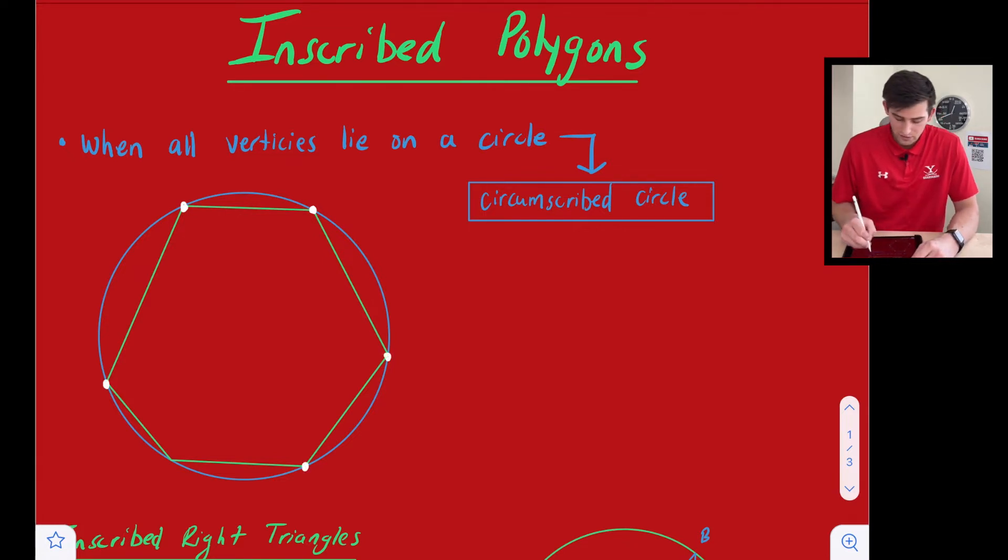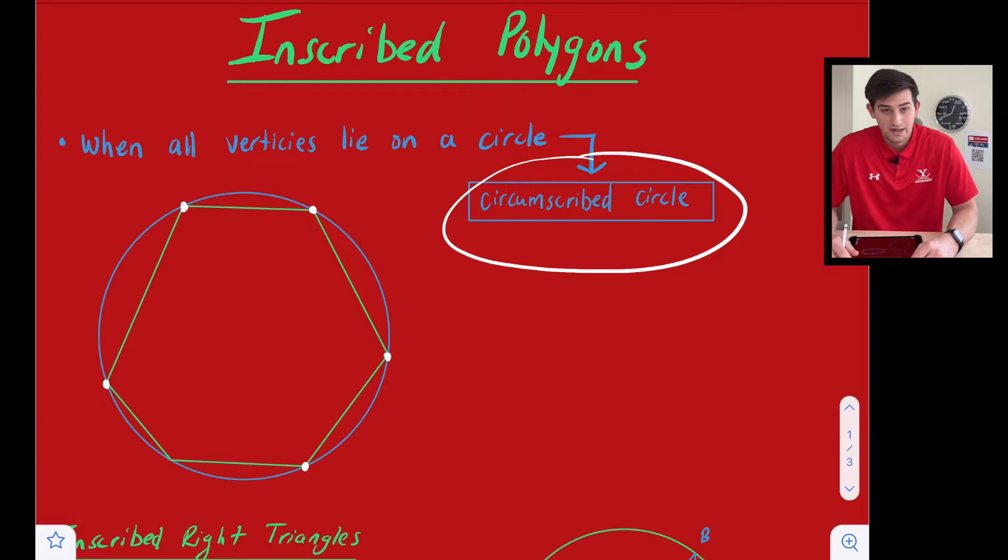So what do we call this circle? We call it a circumscribed circle. So we say that this polygon is within a circumscribed circle. It is inscribed in the circle.